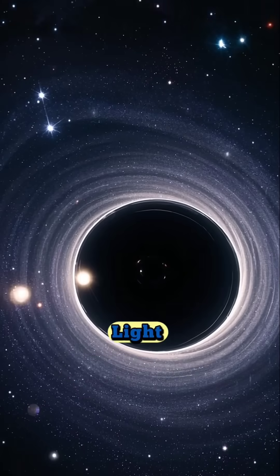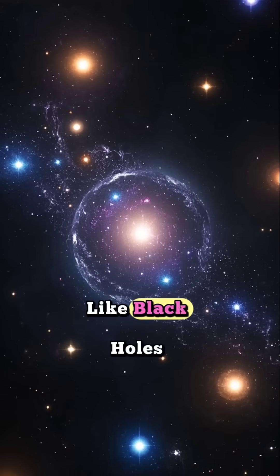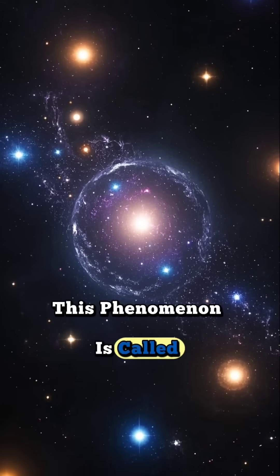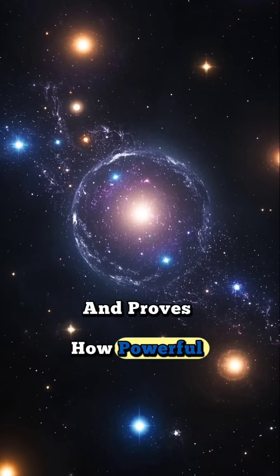5. Gravity affects light. Even light bends around massive objects like black holes. This phenomenon is called gravitational lensing, and proves how powerful gravity is.